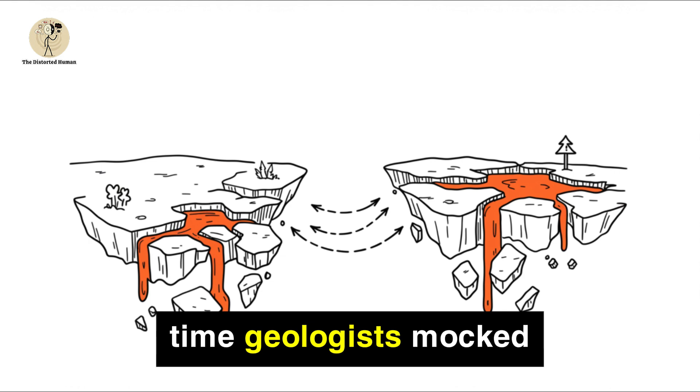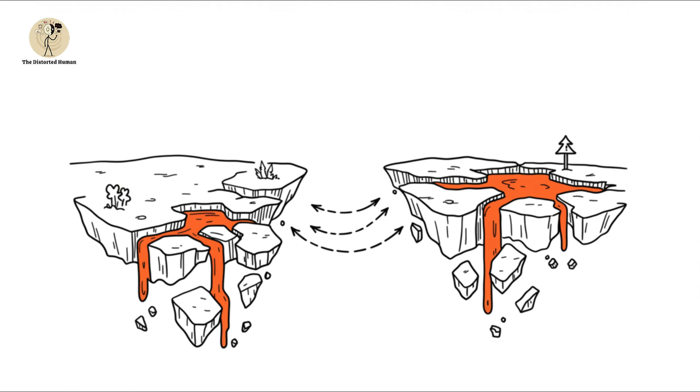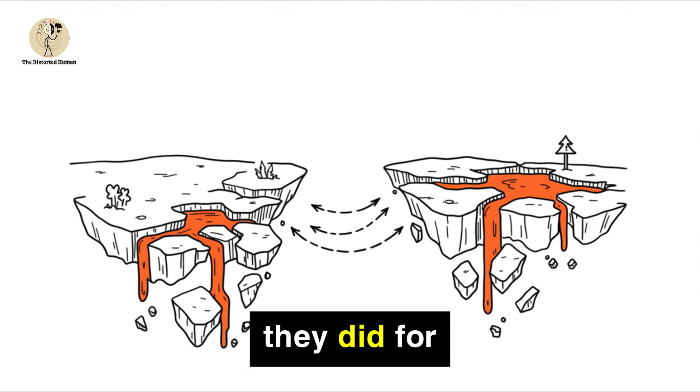But at the time, geologists mocked him. They called the idea impossible, like saying the moon was made of cheese. Wegener couldn't explain how the continents moved. He only knew they did. For decades, his theory was dismissed as a joke.